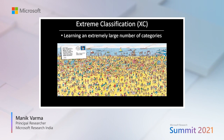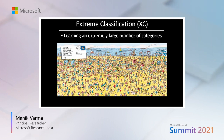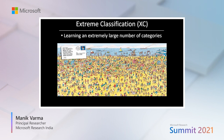On the other hand, extreme classification allows us to classify inputs into millions or even billions of categories. For instance, we might want to classify this Wally image into not just a hundred categories, but say all the words in the dictionary, or all the concepts on Wikipedia, or the top hundred million queries currently being asked on Bing today, or perhaps even the subset of billions of people around the world who might be interested in finding Wally in this image.